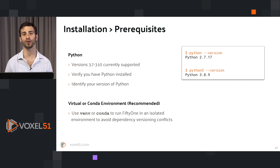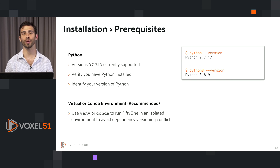You can check your Python version in your terminal by running `python --version` or `python3 --version` depending on your machine. You can run FiftyOne using your built-in Python installation, but we at Voxel51 strongly recommend using a virtual environment — either conda or venv — and we're going to show you how to do this with venv.